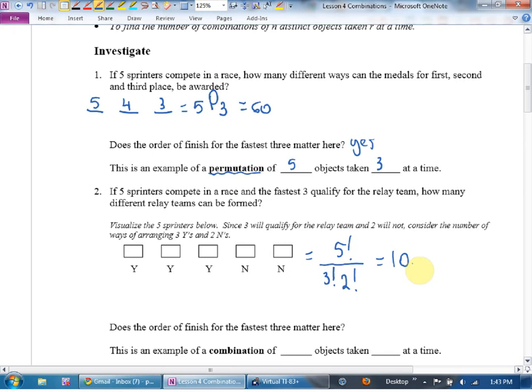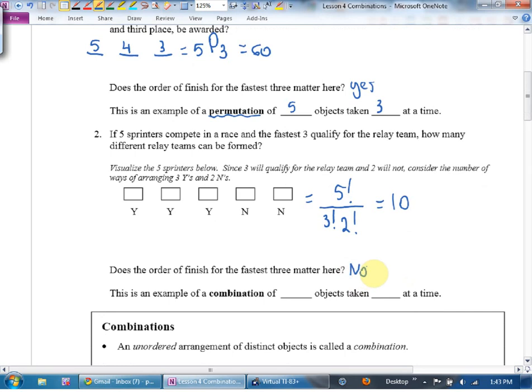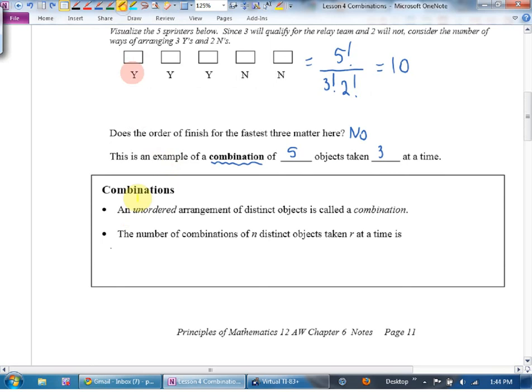Does the order of the three matter here? No. This is an example of a combination of five objects taken three at a time. And here is really the difference. Look up.